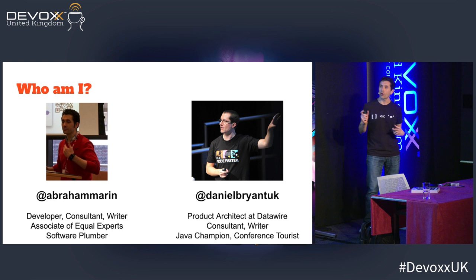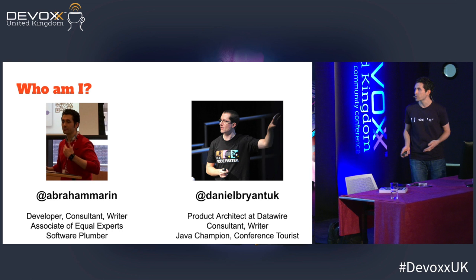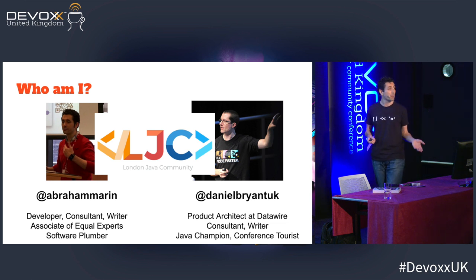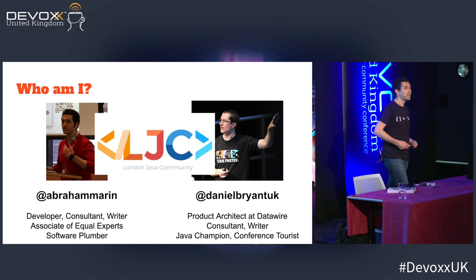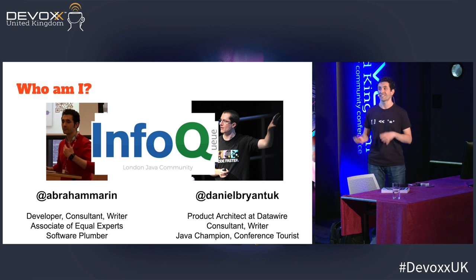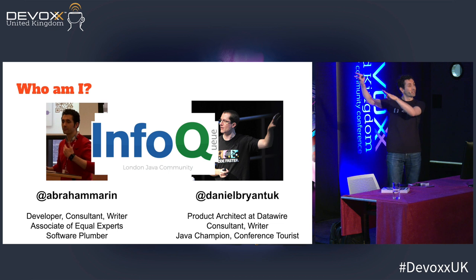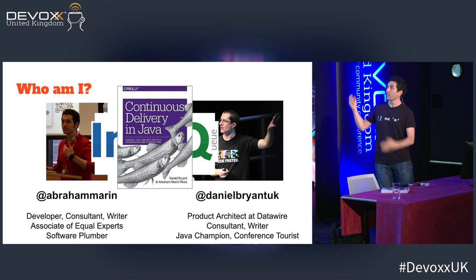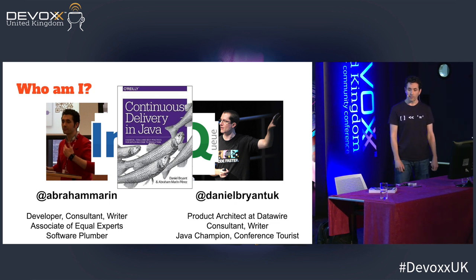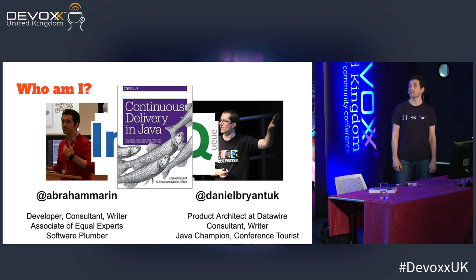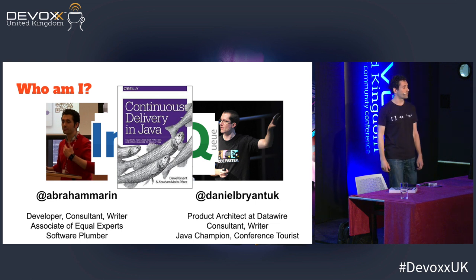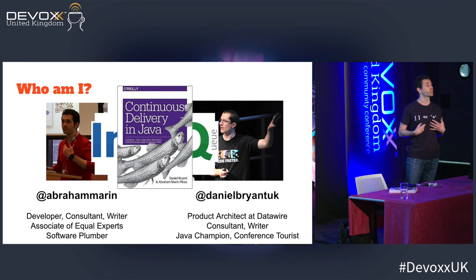Daniel and I don't think we've ever worked at the same place. However, we do happen to gravitate in the same circle. We're both quite active in the London Java community and we both try to help run things like the open conference. We also both collaborate on InfoQ, although Daniel does a lot more than I do. And the last thing that connects us is this book we recently wrote together, called Continuous Delivery in Java, published last November. It's available at the O'Reilly booth. The content of the talk today is actually quite related with some of the content of the book, so hopefully the talk should clear your doubts.